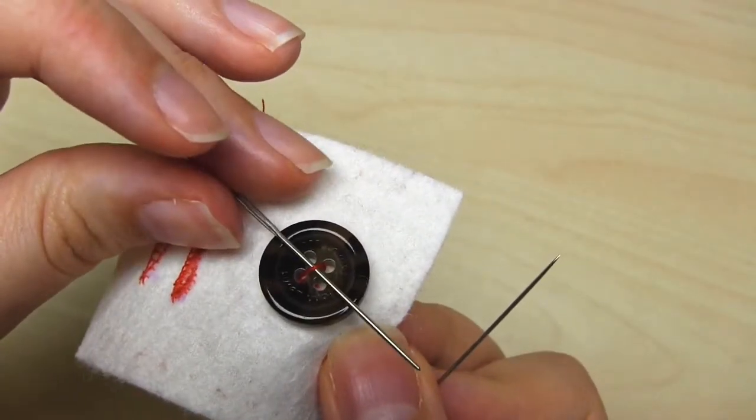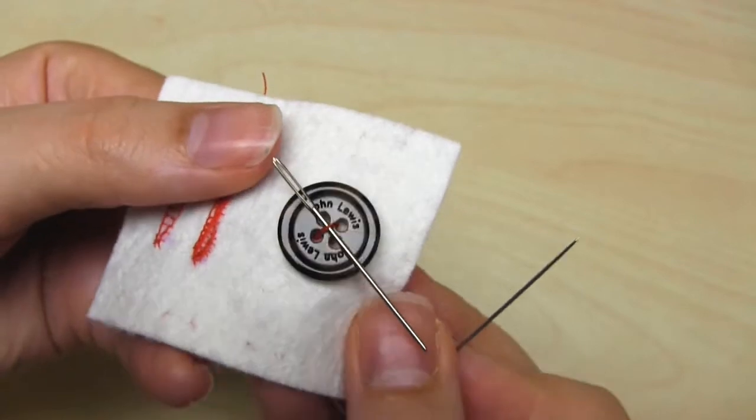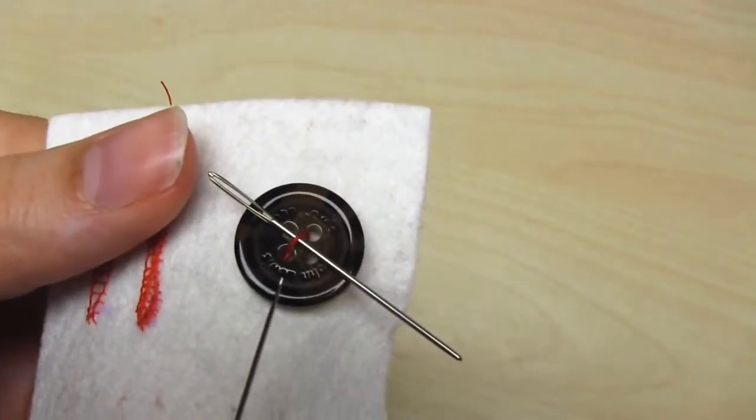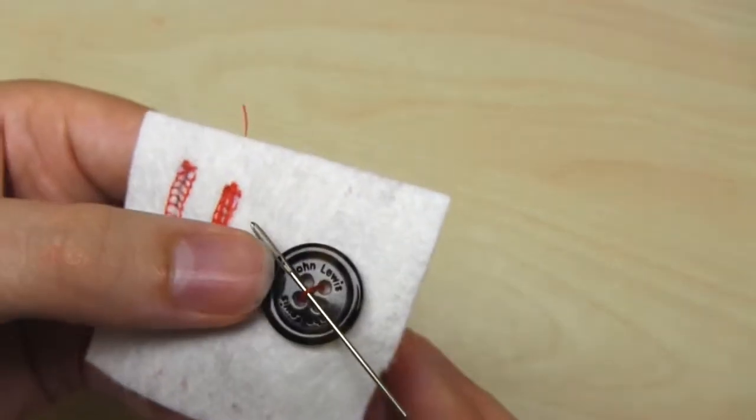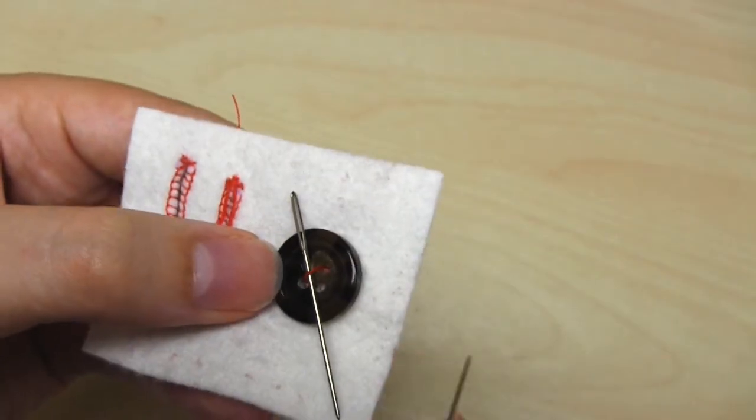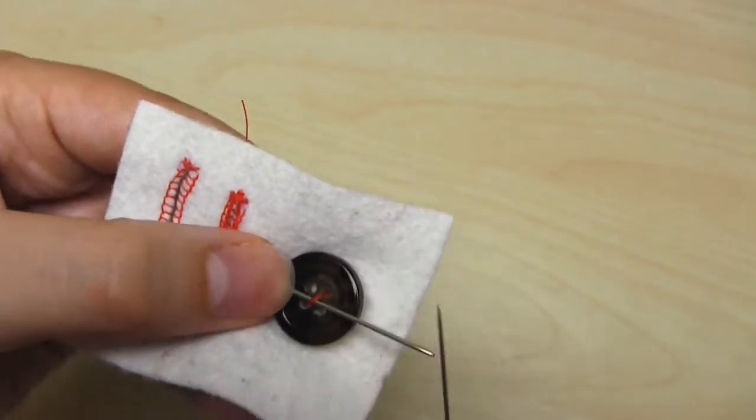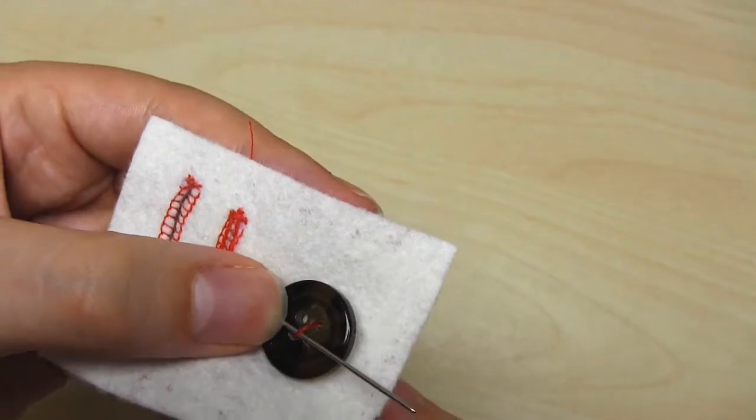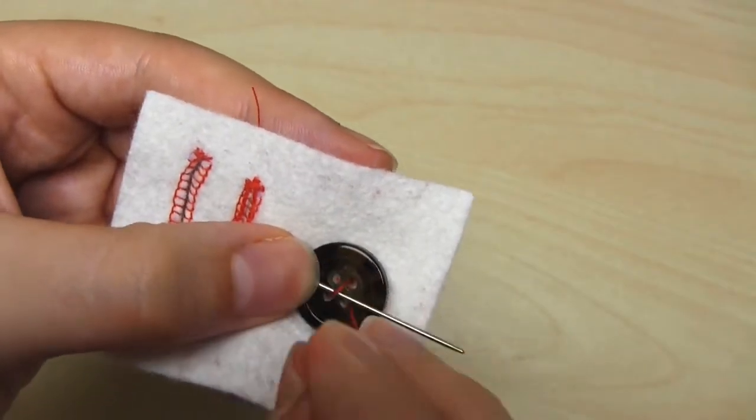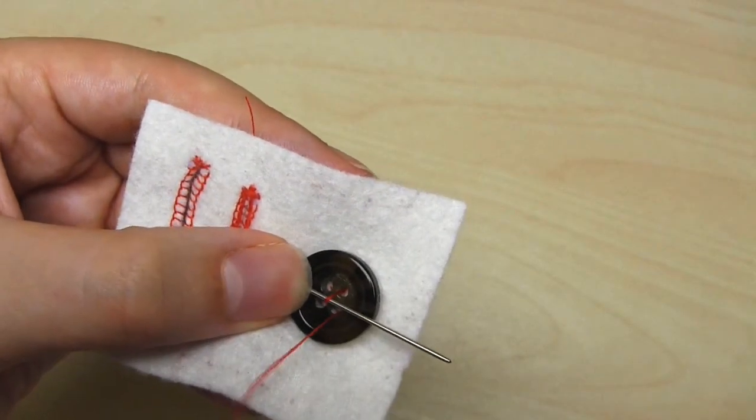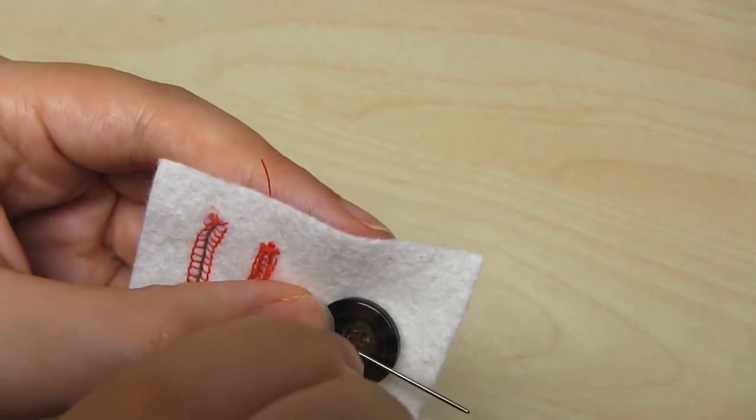Next, take your larger needle and place it on the front of the button, under the stitch you've just made. Then continue stitching your button to your fabric. So come up through the bottom right hole, and then go back down again through the top left hole.